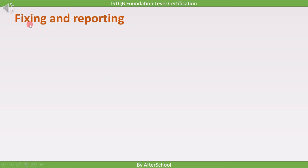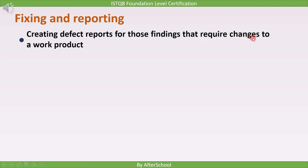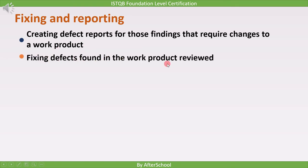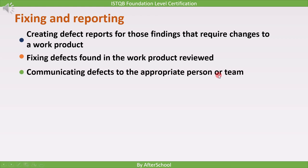After communicating and analyzing defects, we fix the defect and make the final defect report. First, we create defect reports only for those findings that require changes to the work product in this release. Then we fix those applicable defects. While fixing a defect, if we find it is caused by another module, we communicate the defect to the appropriate person or team responsible for that module. Initially we may feel the defect belongs to one module, but while fixing it we may find the cause lies in another module, and at that point we communicate it to the responsible person.